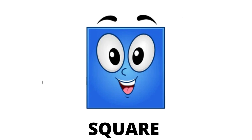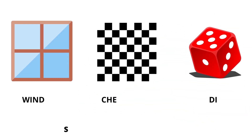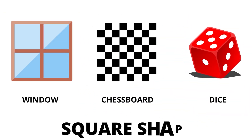Our next shape is square. Square has four sides. The real life examples of square are window, chessboard, and dice.